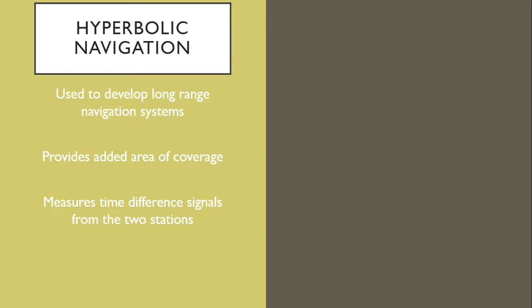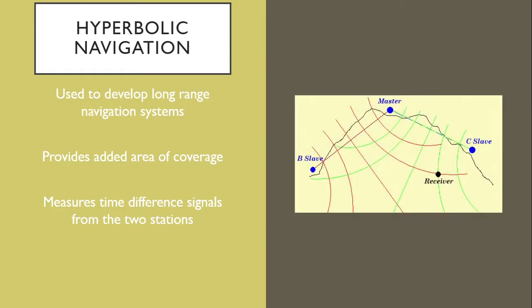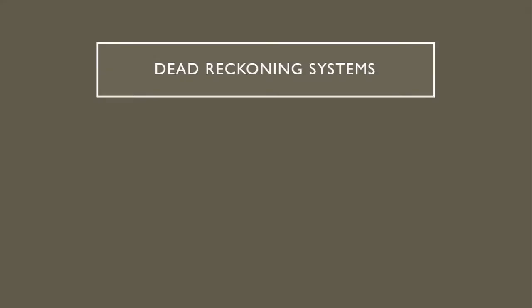Hyperbolic navigation allows long range coverage and systems are often placed along coastlines. Unlike the previously discussed systems, dead reckoning systems do not require external inputs or data, which allows long distance navigation over oceans and in undeveloped areas.